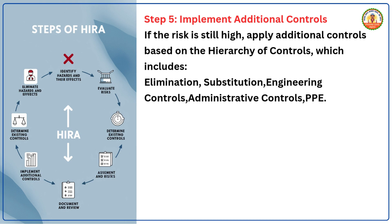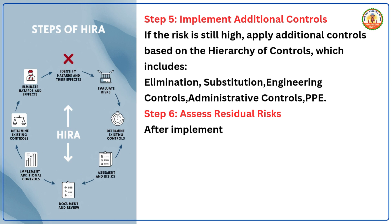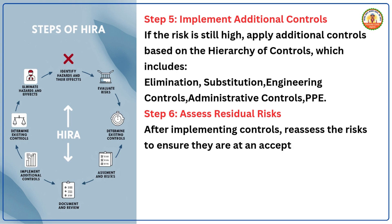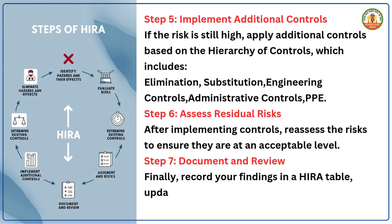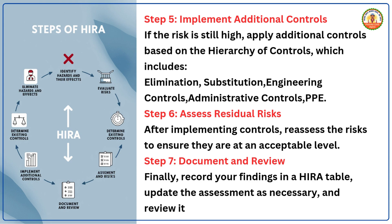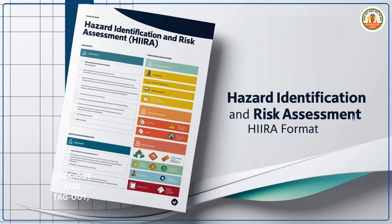The hierarchy of controls also includes personal protective equipment (PPE). Step 6 — Assess residual risks: after implementing controls, reassess the risks to ensure they are at an acceptable level. Step 7 — Document and review: record your findings in a HIRA table, update the assessment as necessary, and review it periodically.